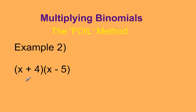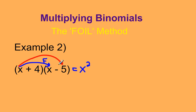Let's try another example: x plus 4 multiplied by x minus 5 — two binomials multiplied together. We're going to use the FOIL method again. F stands for first, so we multiply the first two terms: x times x is x squared. O stands for outside. Be careful now because this time it is negative 5, so x times negative 5 is negative 5x.